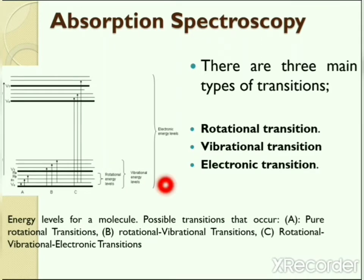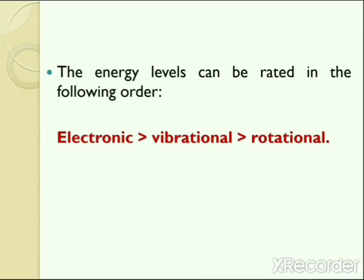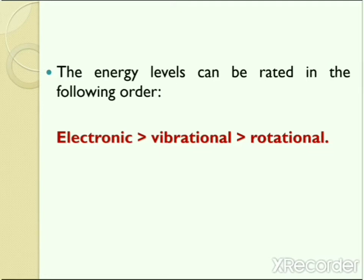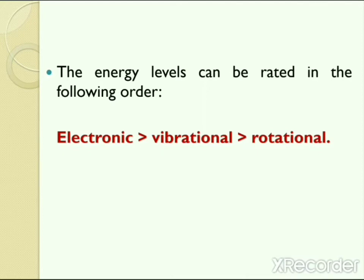This diagram shows three types of transitions at different energy levels. Each transition differs by an order of magnitude. Rotational transitions occur at lower energies, insufficient to cause vibrational or electronic transitions. Vibrational and electronic transitions require higher energies. Rotational transitions occur at longer wavelengths, vibrational transitions at near infrared, and electronic transitions at the ultraviolet region of the electromagnetic spectrum. It is therefore clear that vibrational transitions occur in the infrared region.